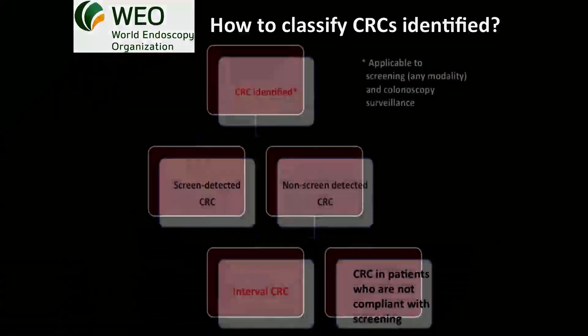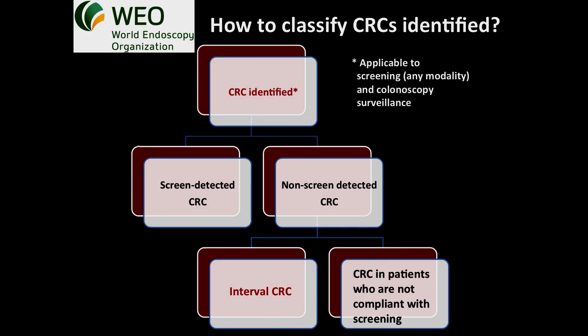Colorectal cancers identified in the context of screening and colonoscopy surveillance can be classified into screen-detected cancers, defined as cancers diagnosed within a defined period after a positive test or examination, and non-screen-detected cancers, which can include interval cancers and cancers due to systemic causes such as non-compliance with screening. The WEO nomenclature is applicable to screening with any modality and colonoscopy surveillance.